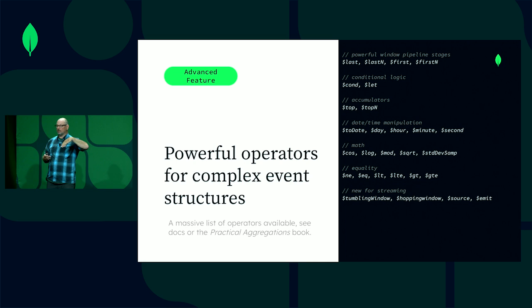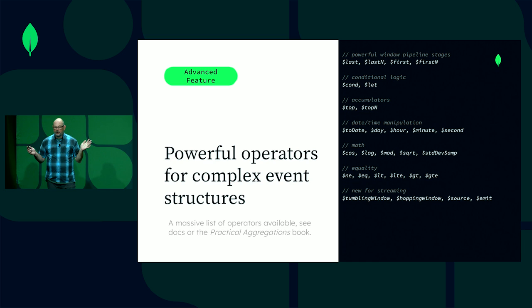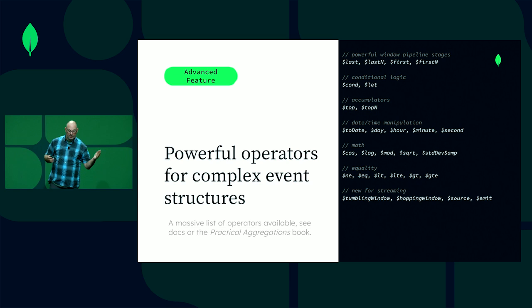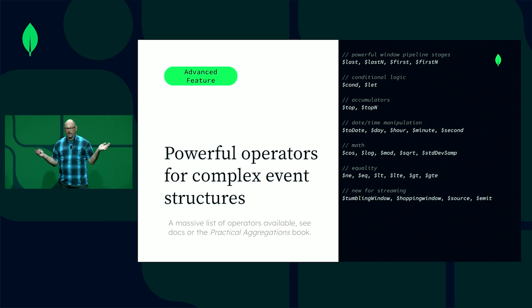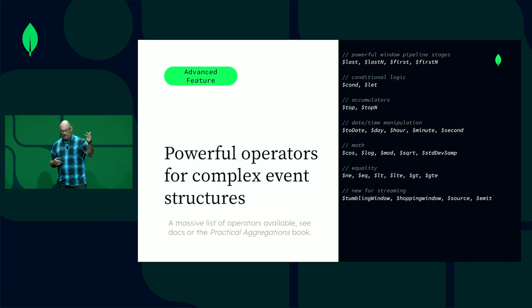Let's get a bit more detailed about the capabilities. The operators that exist for the aggregation framework all exist in stream processing — a couple of exceptions where they don't make sense, but think about last, last-end, first, conditional logic like $let, or accumulators like $top. These are natural paradigms for stream processing that already exist day one — we didn't have to write new code, they're not buggy, they've been working for years. At the bottom we've got new ones: tumbling window, hopping window, source Kafka, and emit. Emit can also be back to Kafka.